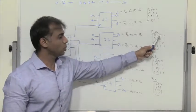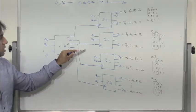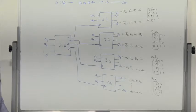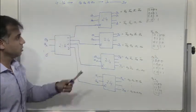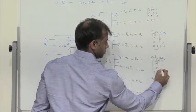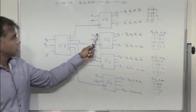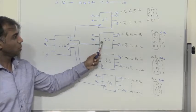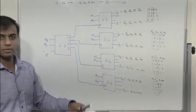When A3 and A2 are 0,1, line 1 is high, enabling the second decoder while the other three are disabled. Then when A1,A0 is 0,0, Y4 is high; 0,1 gives Y5; 1,0 gives Y6; and 1,1 gives Y7.